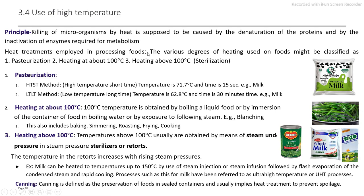First, pasteurization. You can see this is pasteurized milk. Two methods: high temperature short time, and low temperature longer time. These are the time-temperature combinations for milk specifically. This time-temperature combination varies with respect to the specific food product. Then heating at about 100 degrees Celsius, in which foods are directly merged into boiling water for two to three minutes up to a maximum of five minutes. This specifically involves the blanching treatment for fruits and vegetables. Before frozen storage, blanching is first carried out. It also includes other methods like baking, roasting, frying, and cooking processes in the temperature range of 100 or slightly above 100 degrees Celsius.